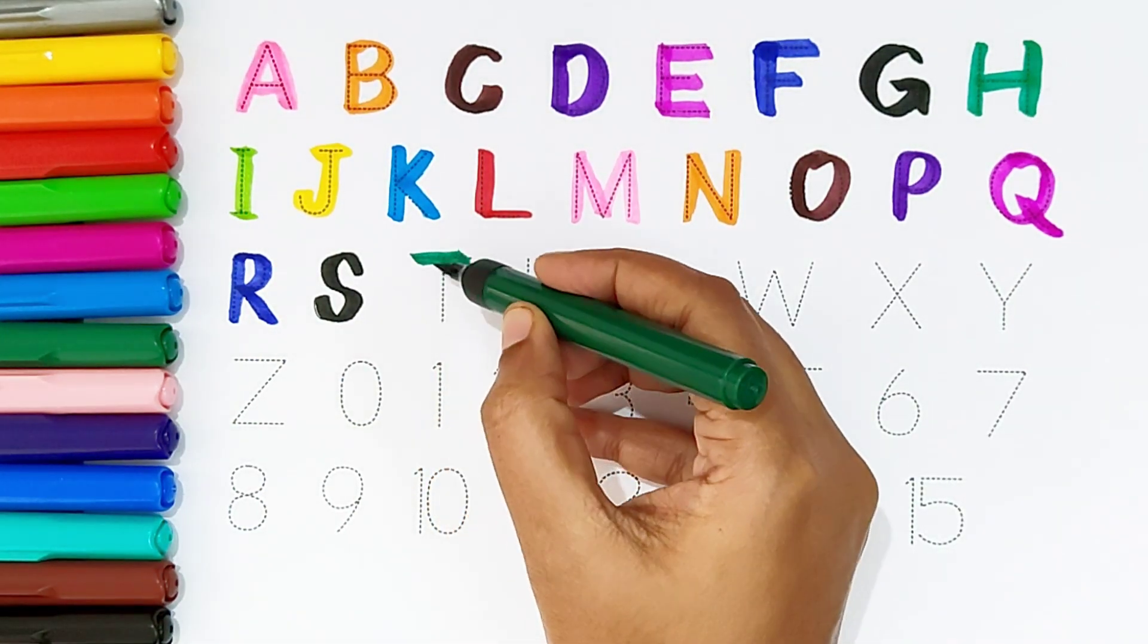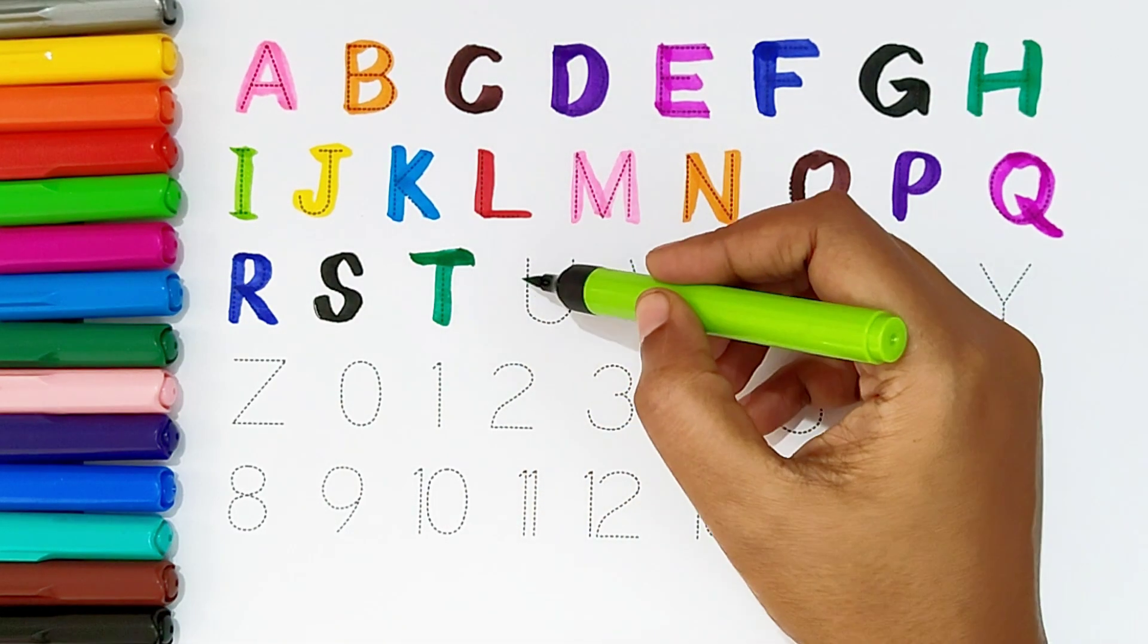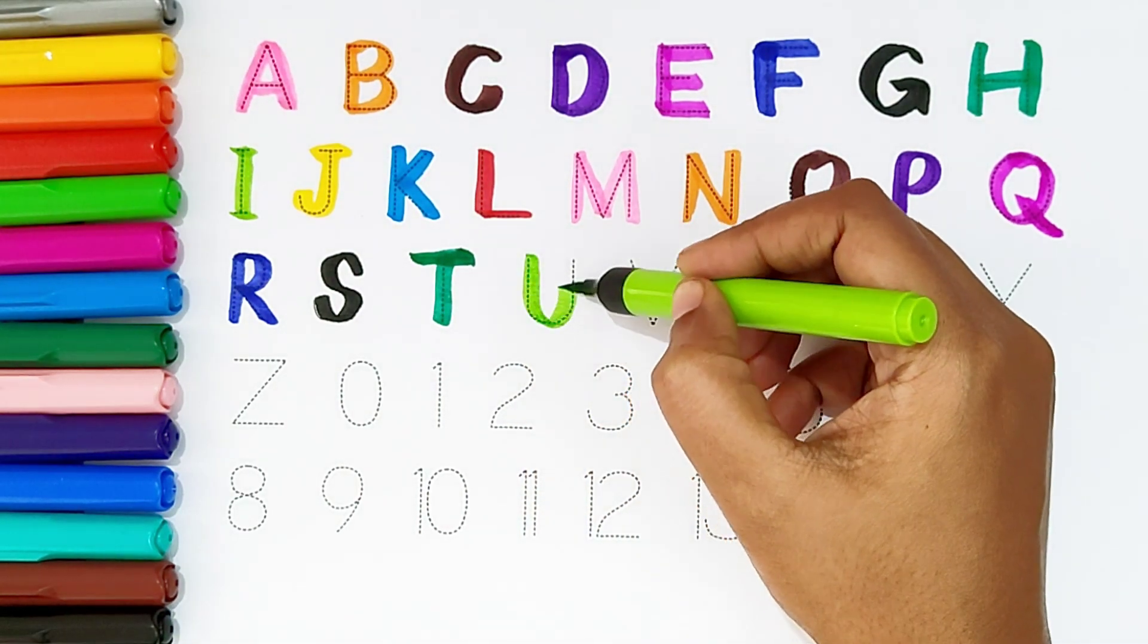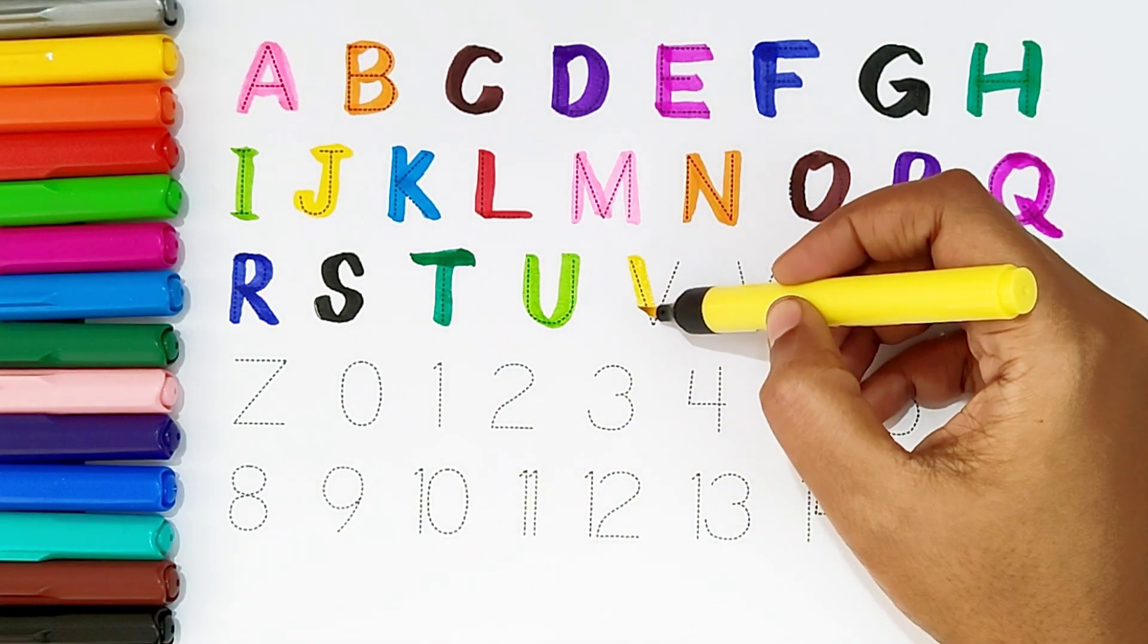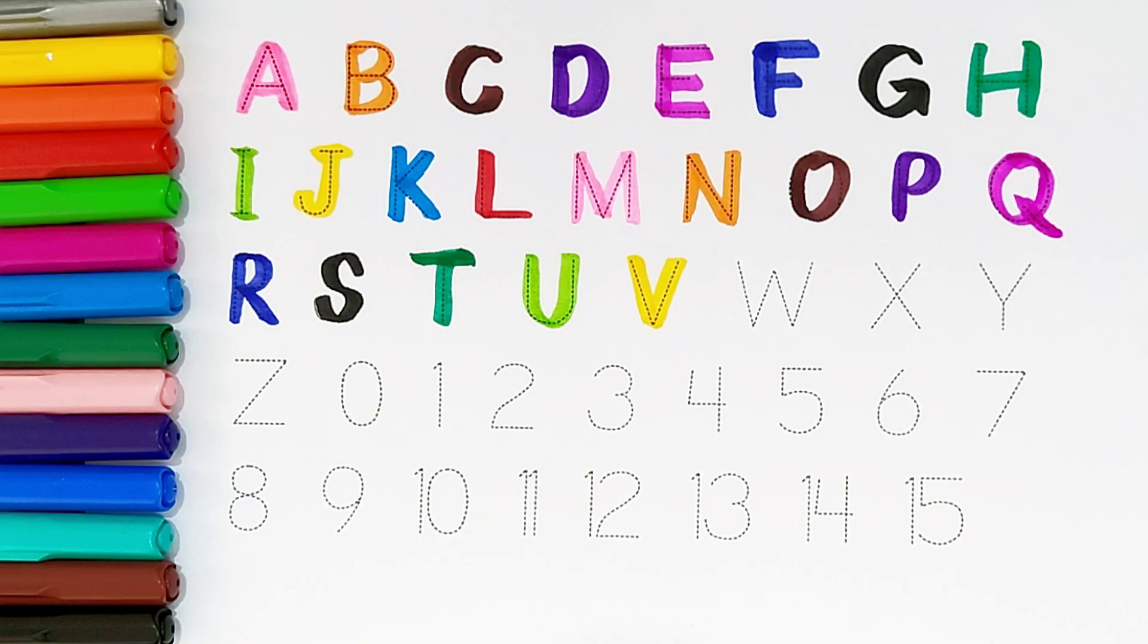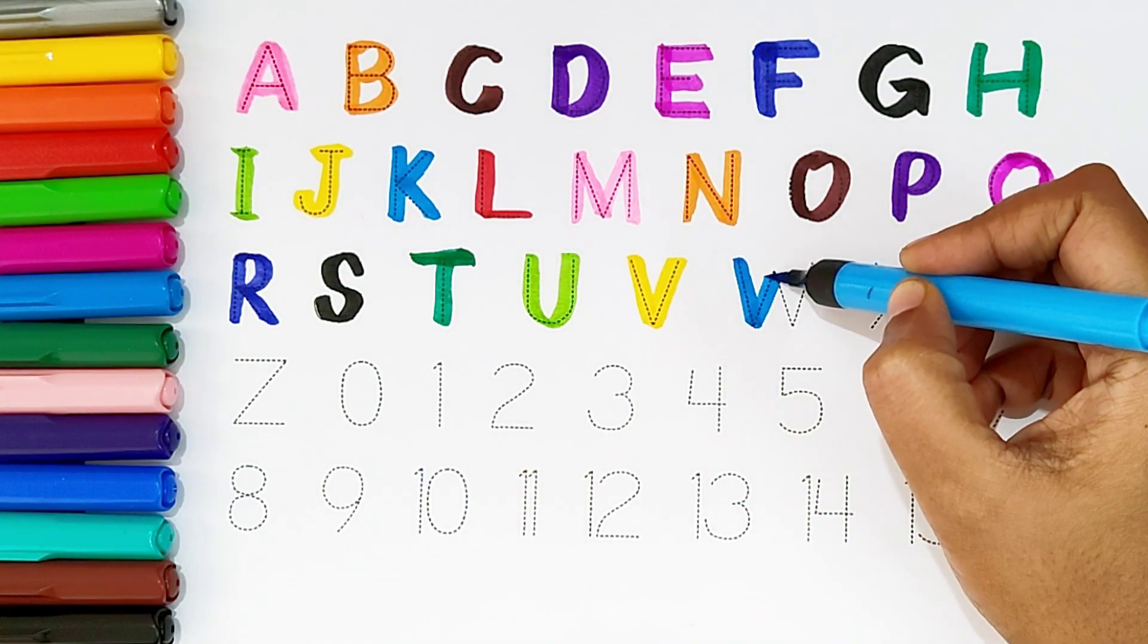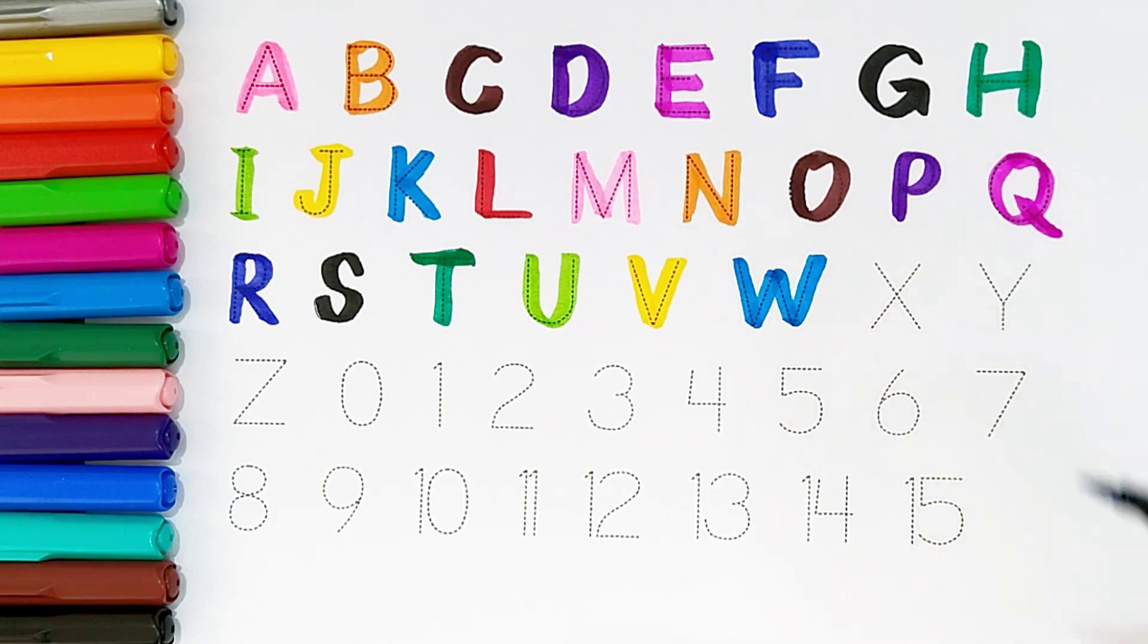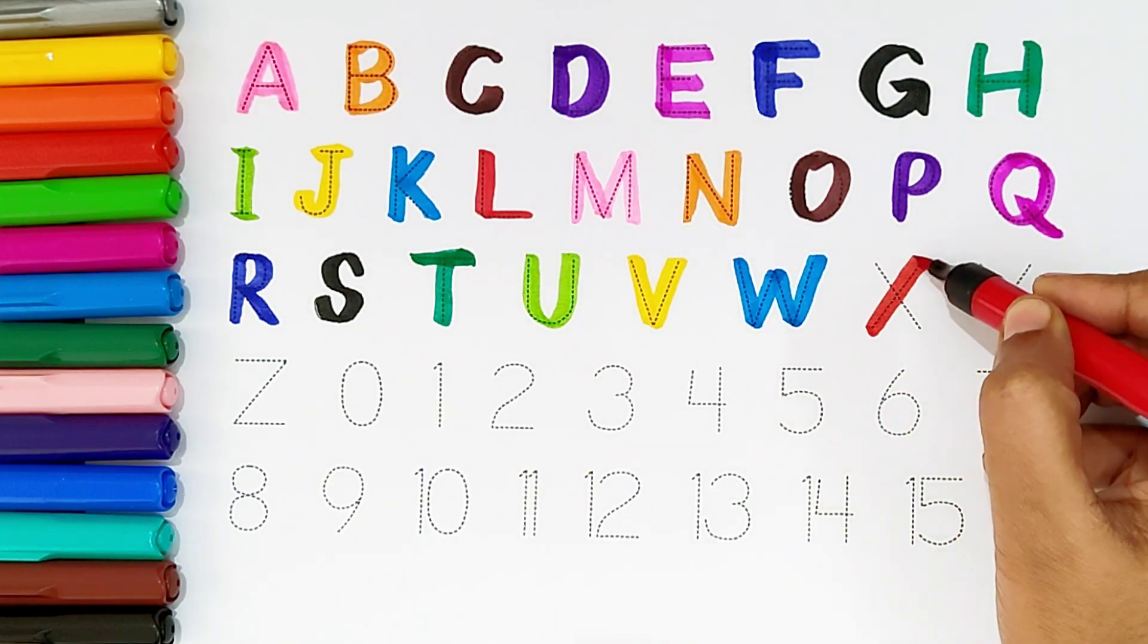T, dark green color. T is for tent. U, light green color. U is for unicorn. V, yellow color. V is for violin. W, light blue color. W is for water.